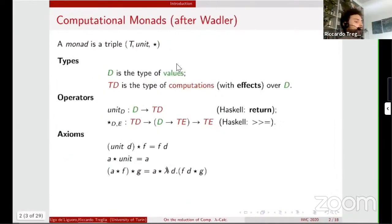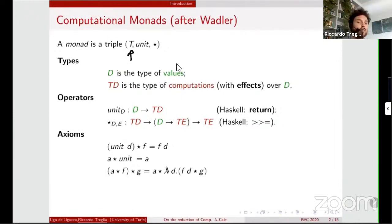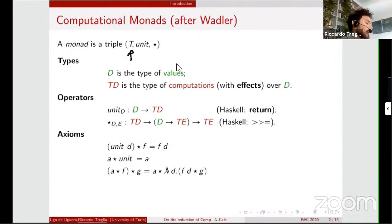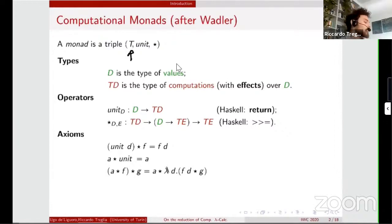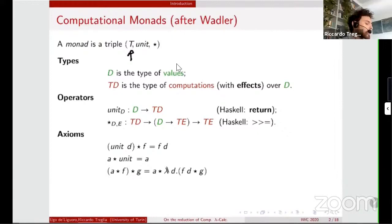Let's start with the definition by Wadler's computational monad, that is a triple. A triple where the first element is a type constructor that leads us to move from values to computations, where computations are programs with effects built over values. This triple is equipped with two other polymorphic operators, unit and bind. Unit is a lifting or better coercion of values to computation, to trivial computations. And the bind operator takes an input computation, a function from values to computation, giving back a computation. These two operators should follow three basic axioms: the functional application, the identity law, and a sort of associativity.